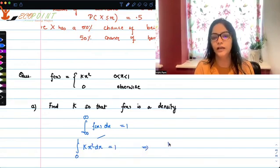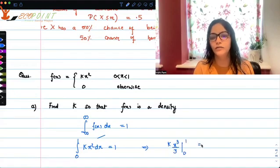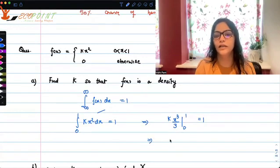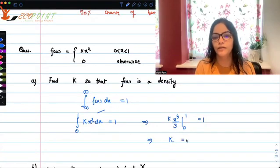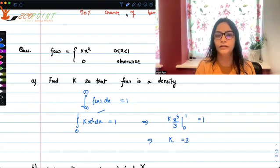kx square dx should be equal to 1. That's going to happen in case you integrate, you'll get kx cube upon 3, 0 to 1 should be equal to 1. So that is going to happen in case k is equal to 3.